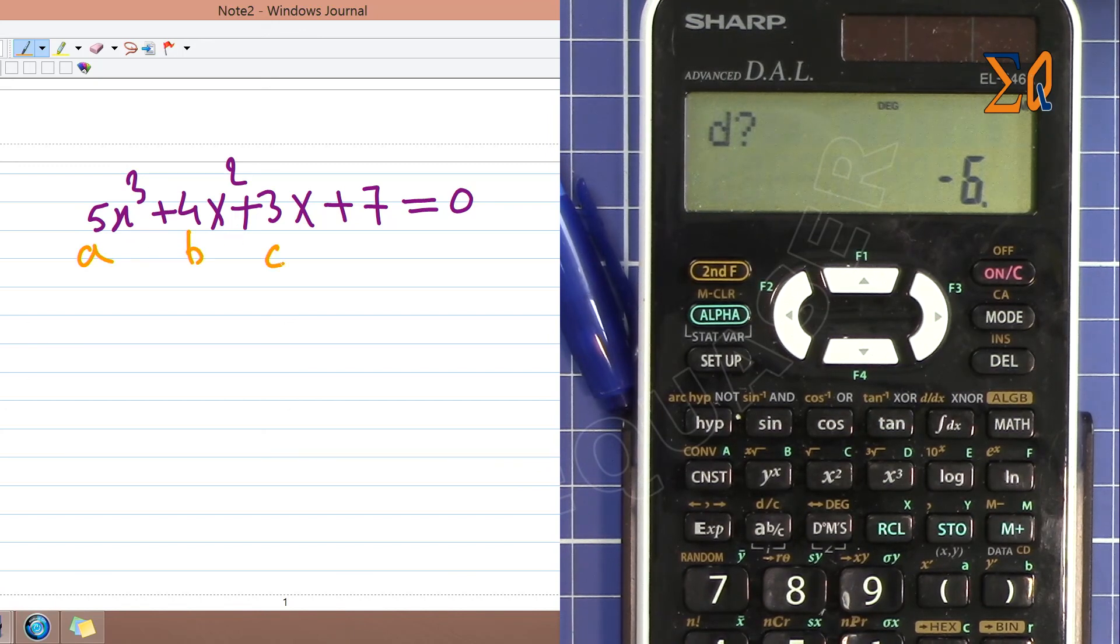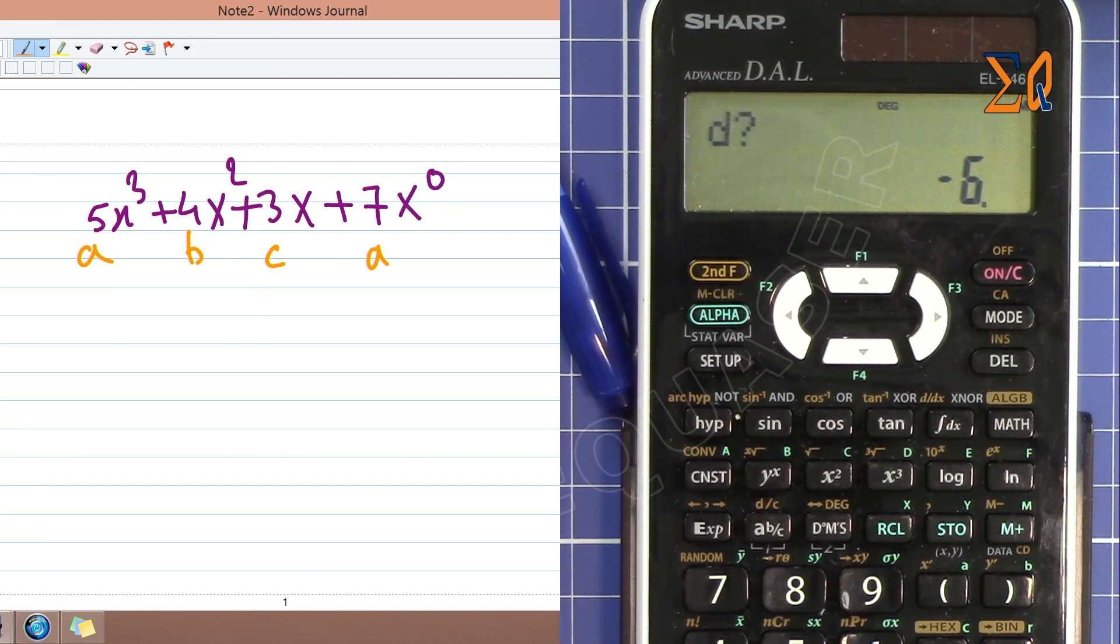So this is A, B, C, and D - these are all coefficients. Remember, to make it clear why we have 7, the reason for that is that we have x to the power 0, so because x⁰ is 1, so we don't write 1.